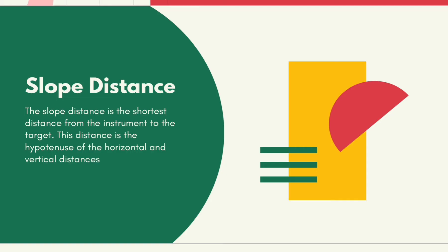Slope distance: The slope distance is the shortest distance from the instrument to the target point. This distance is the hypotenuse of the horizontal and vertical distances. The horizontal and vertical distances can be calculated if the slope distance and vertical angle are known.